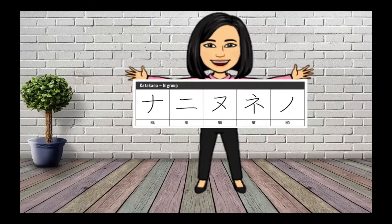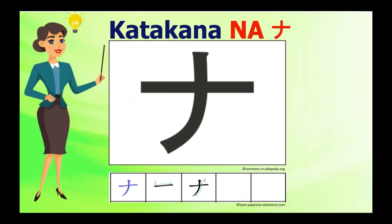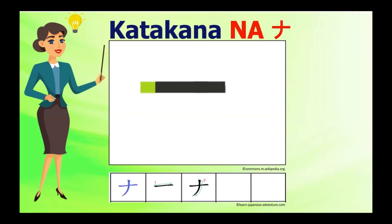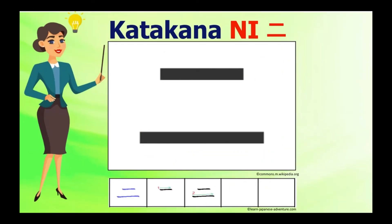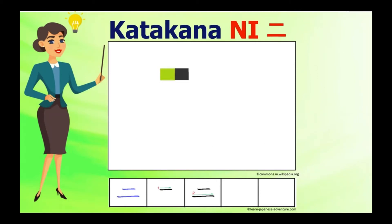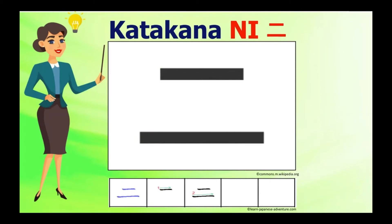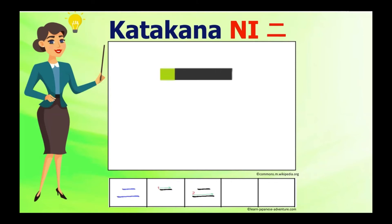Next is the katakana N group: na-ni-nu-ne-no. Katakana Na — though it looks like a cross, note that the bottom part of the second stroke should be somewhat curved and not straight. Katakana Ni, pronounced 'ni' — did you know that Ni is a word which means number two? Just like number two, Ni is made up of two lines. Note that the first stroke should be slightly shorter than the second stroke.